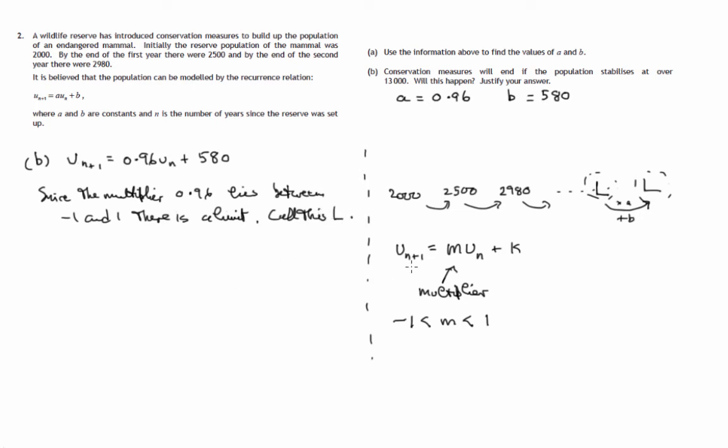So we're at this stage where we know if you multiply L by 0.96 and add 580, you'll end up with exactly the same number. That's what a limit means, that the population in the wildlife reserve of mammals remains constant. So what we can say is that if we take this limit L, multiply it by 0.96, add 580, that's what we've always done, that's the recurrence relation that's involved. We do that procedure to L, we'll end up with L.